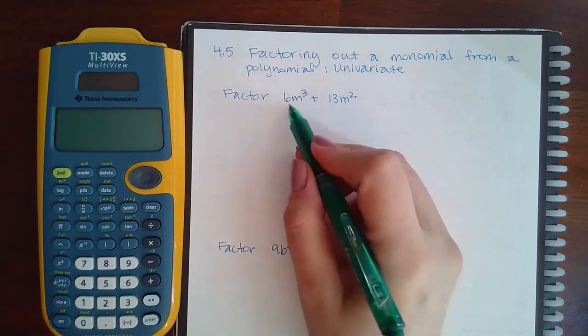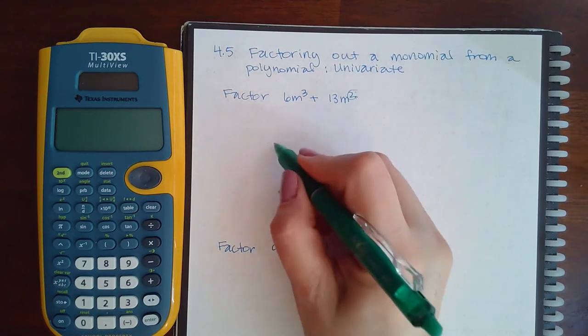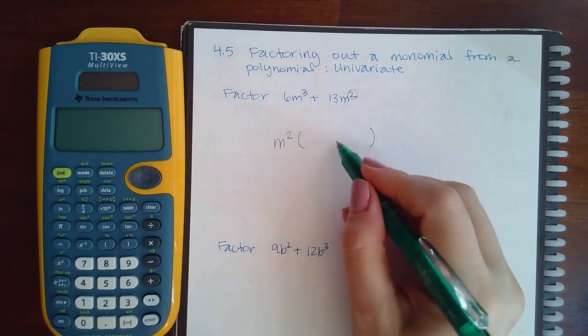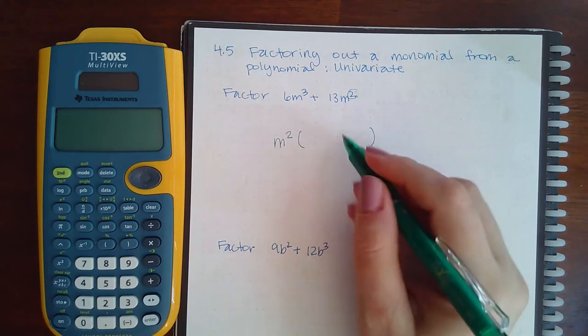So I'm going to have m squared. Now because I have two terms here I should end up with two terms inside here. So how do you find them? Divide both of them by the GCF.